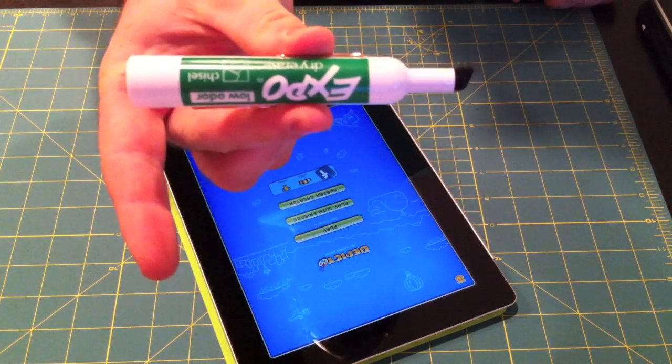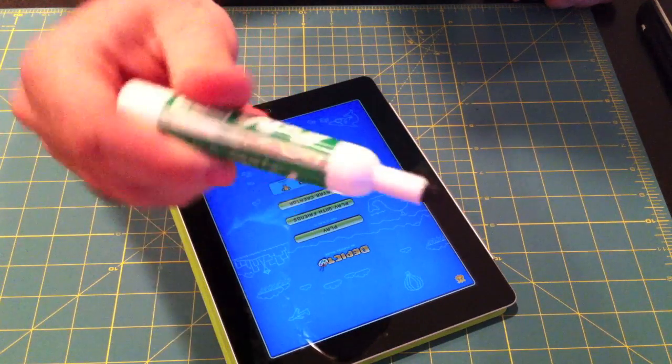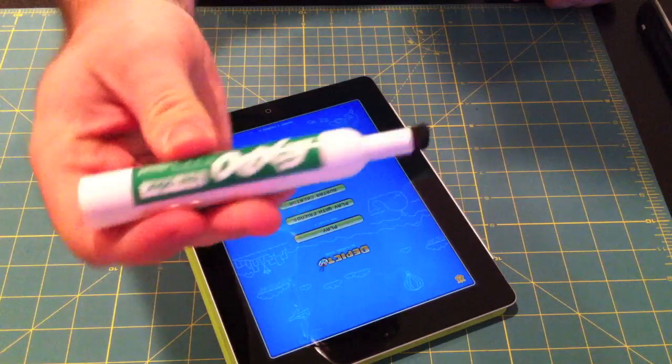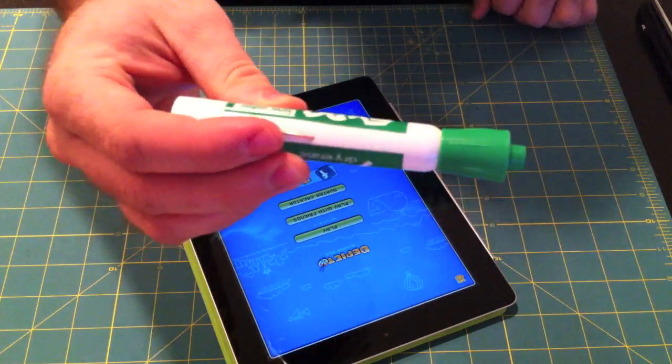So here's a simple do-it-yourself iPad marker. It has a chisel tip, looks pretty much stock, and the cap even still fits, so you can throw it in your bag without any worries.